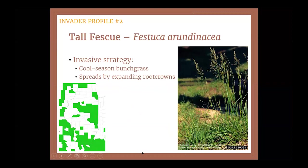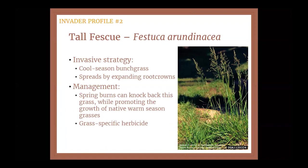Another cool-season grass is tall fescue. This one is a bunchgrass and it spreads by expanding its root crowns. You can see its distribution in east, central, and southern Illinois. Management for this one is going to be similar to smooth brome — timing that burning at that vulnerable plant life stage to knock it back and also promote warm season grass cover, then again pairing that with a grass-specific herbicide to help increase the success of our results.